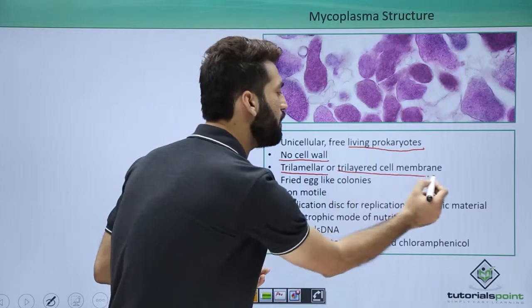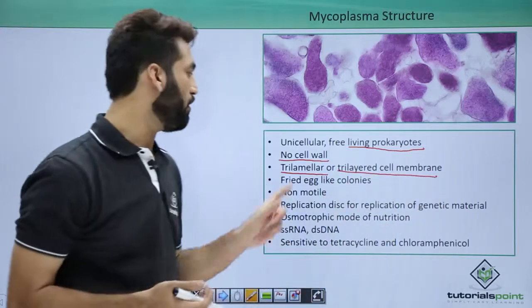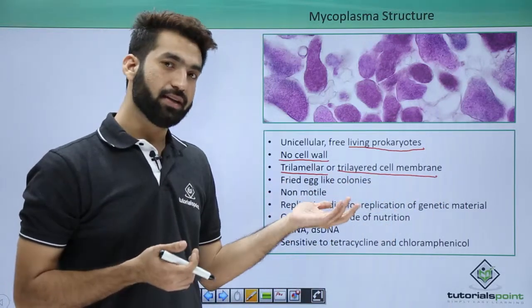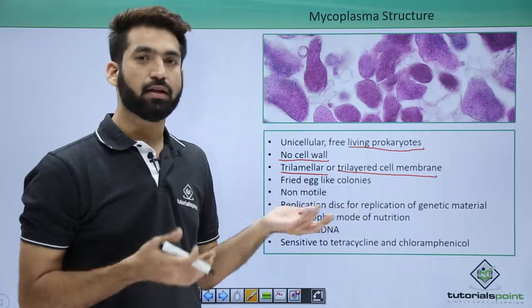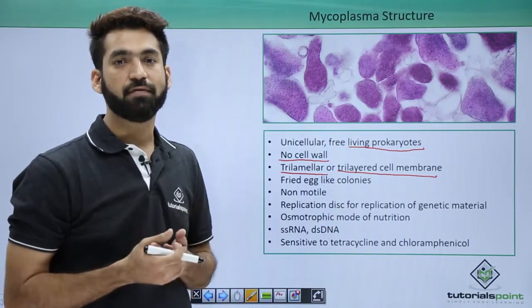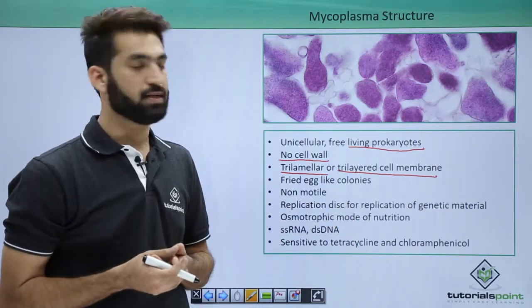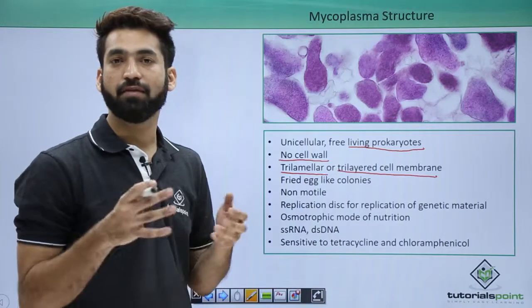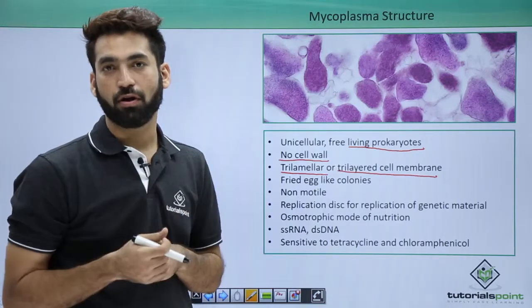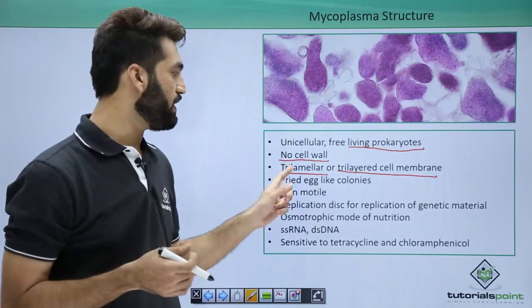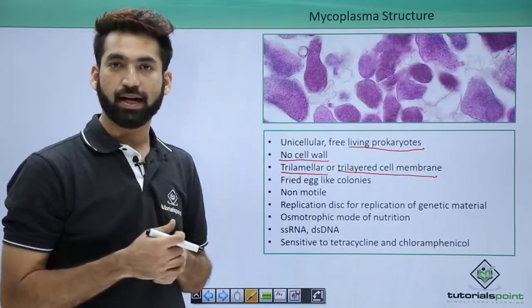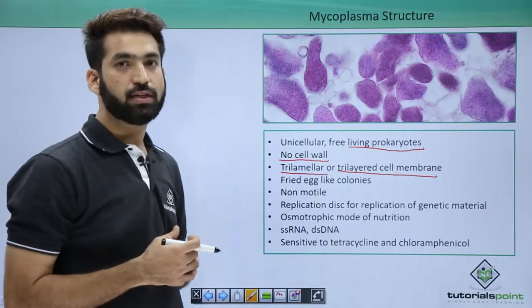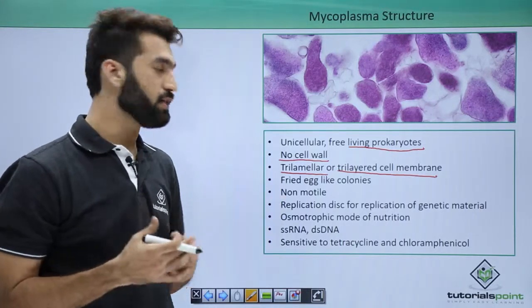Since they don't have a cell wall, the cell membrane is a tri-layered cell membrane, also called a trilaminar cell membrane. When cultured in the laboratory in an in vitro system in a petri dish, they show fried egg-like colonies. So mycoplasma grows in a pattern resembling fried eggs.